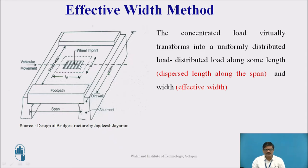A tire of the vehicle will have a certain contact area. That contact with the surface of the deck is shown with the hatched line which we call wheel imprint.